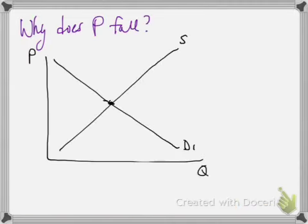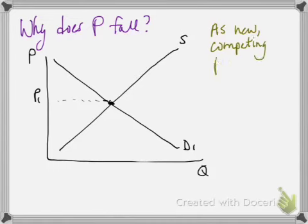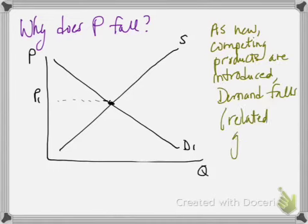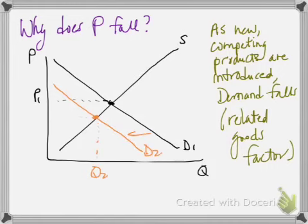So why does the price fall? If we think back to a perfectly competitive market for a moment we have the supply and the demand curve and the interaction of the two set the market price. As new firms enter the market and introduce new products people who might have purchased the original product now see that there are alternatives to choose from.